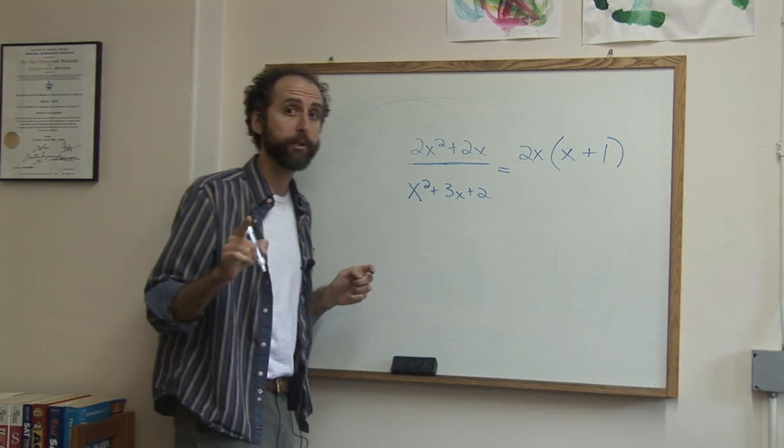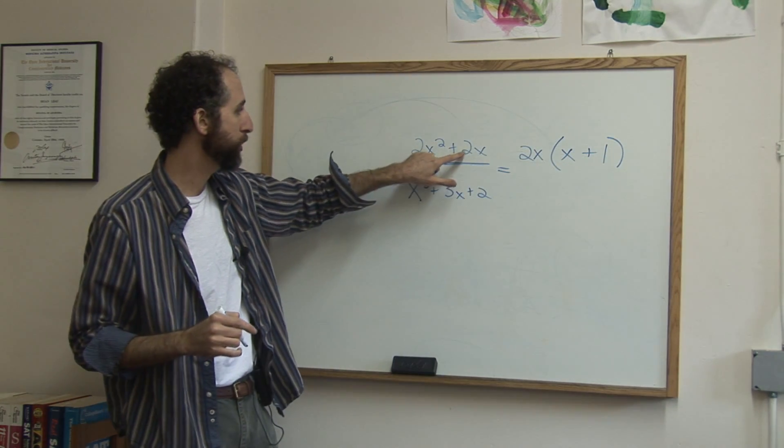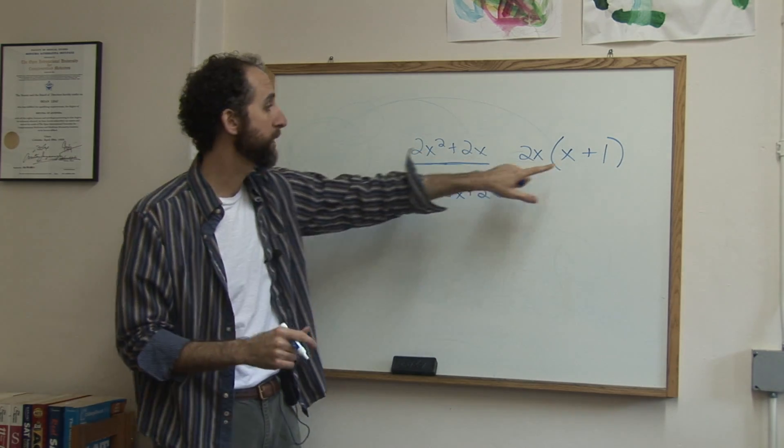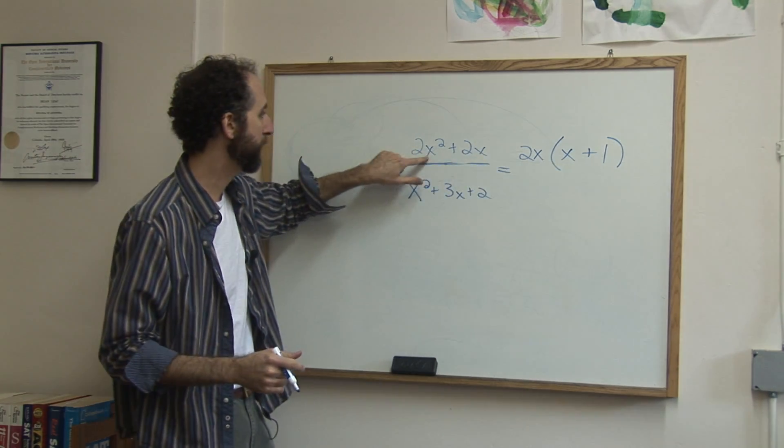Now this is the most common careless error people make on this process. Sometimes they'll say 2x factored out of 2x is gone, it's 0. But in fact, it's 1. So this factored gives me this.